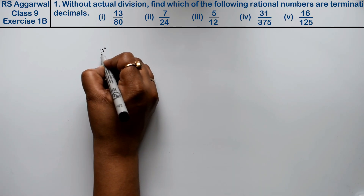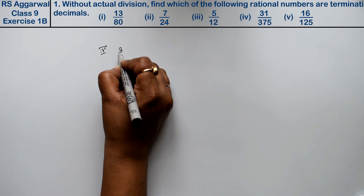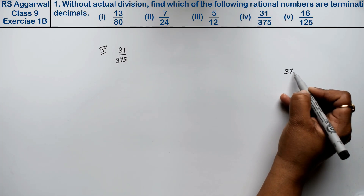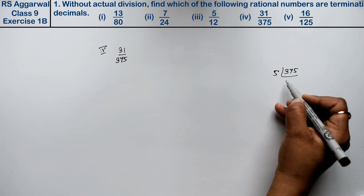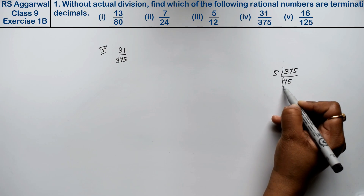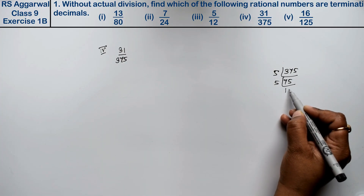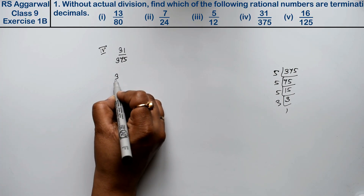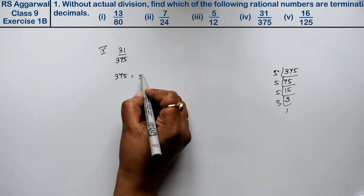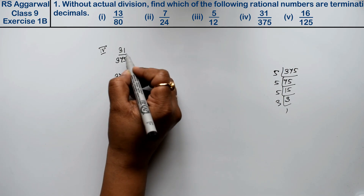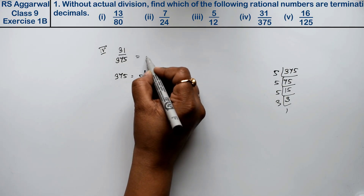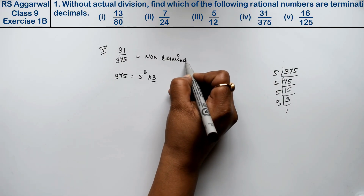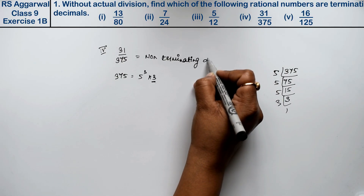Let's do the fourth part. The fourth part is 31 upon 375. We take the prime factorization of 375: 5 × 5 × 5 × 3 = 5³ × 3. Since the factor 3 is present in the denominator, that's why it's a non-terminating decimal.